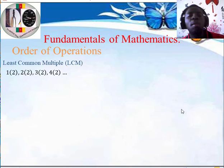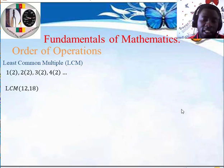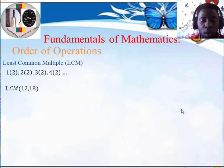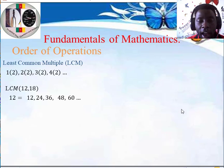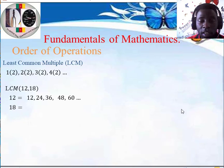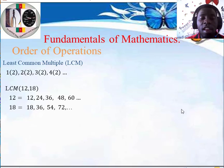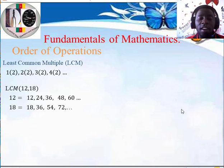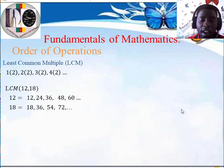Let's look for the least common multiple of 12 and 18. The multiples of 12 are 12, 24, 36, 48, 60, and so on. The multiples of 18 are 18, 36, 54, 72, and so on. We can stop there because we have already found the least common multiple. Looking at both lists, the least common multiple between 12 and 18 is 36. Therefore, the LCM of 12 and 18 is 36.